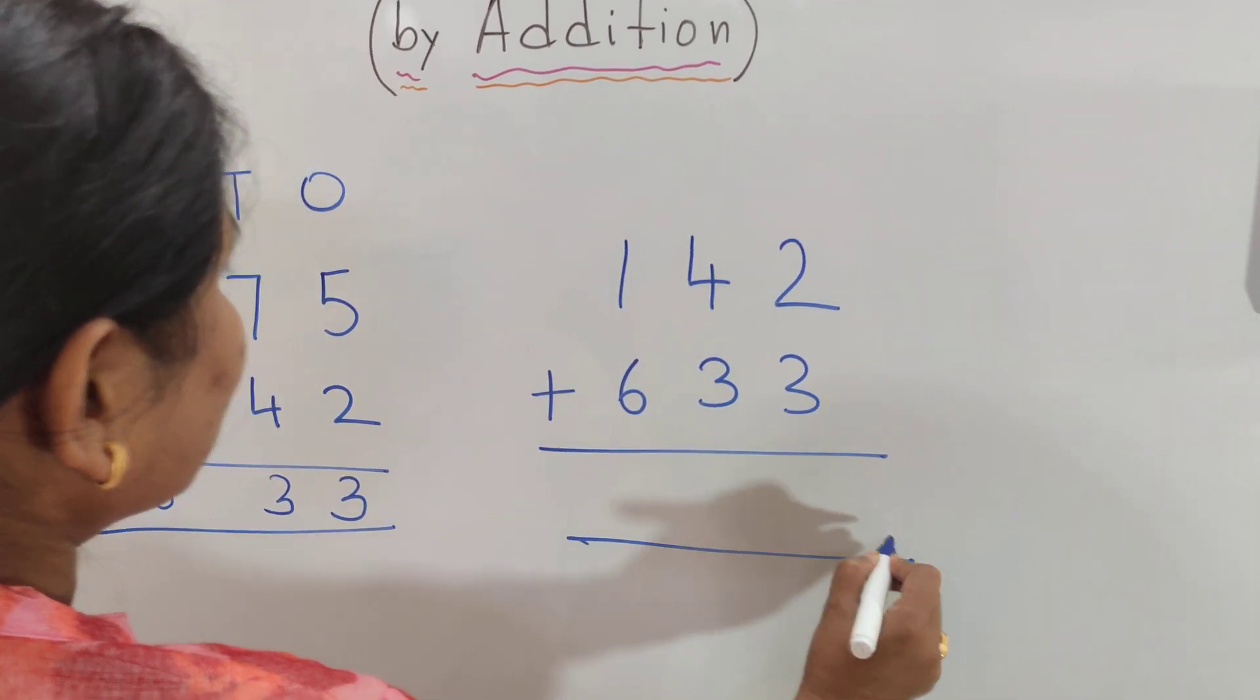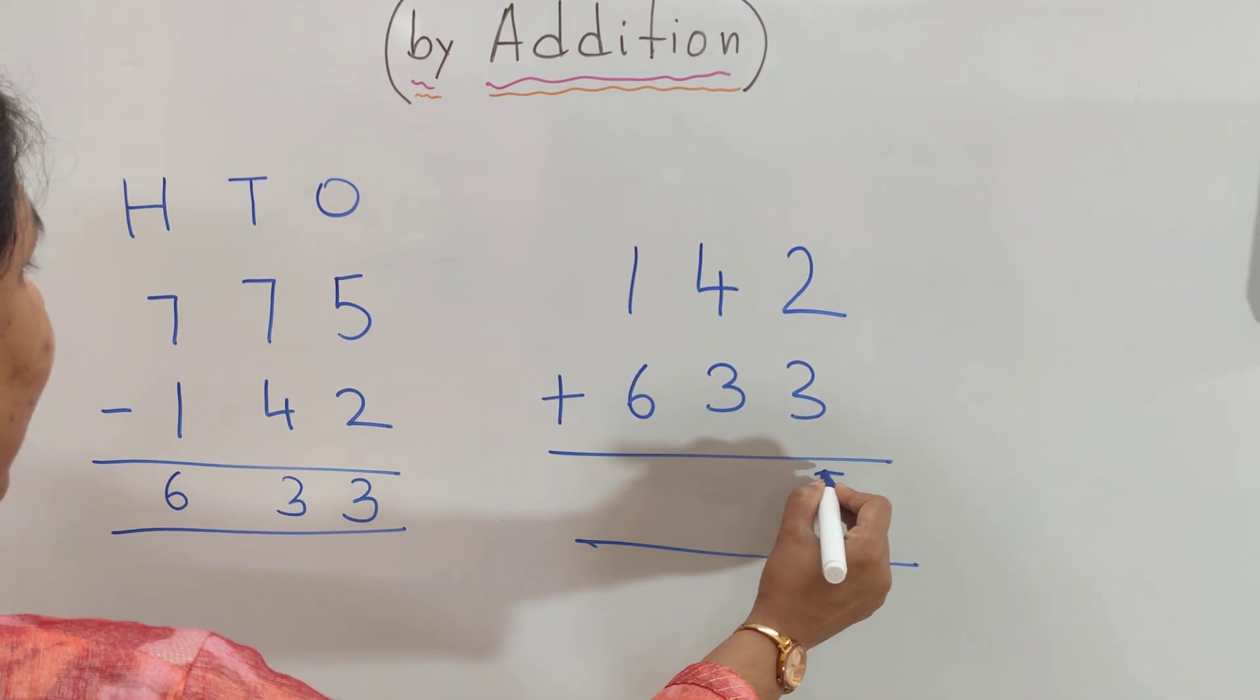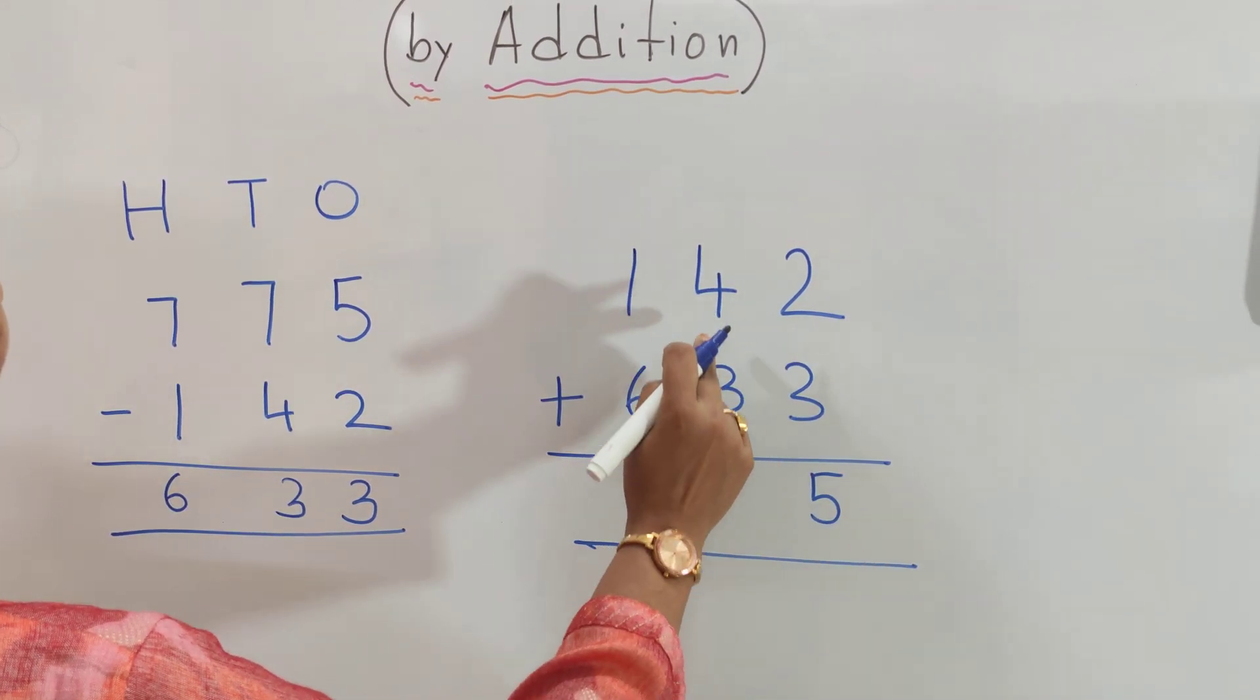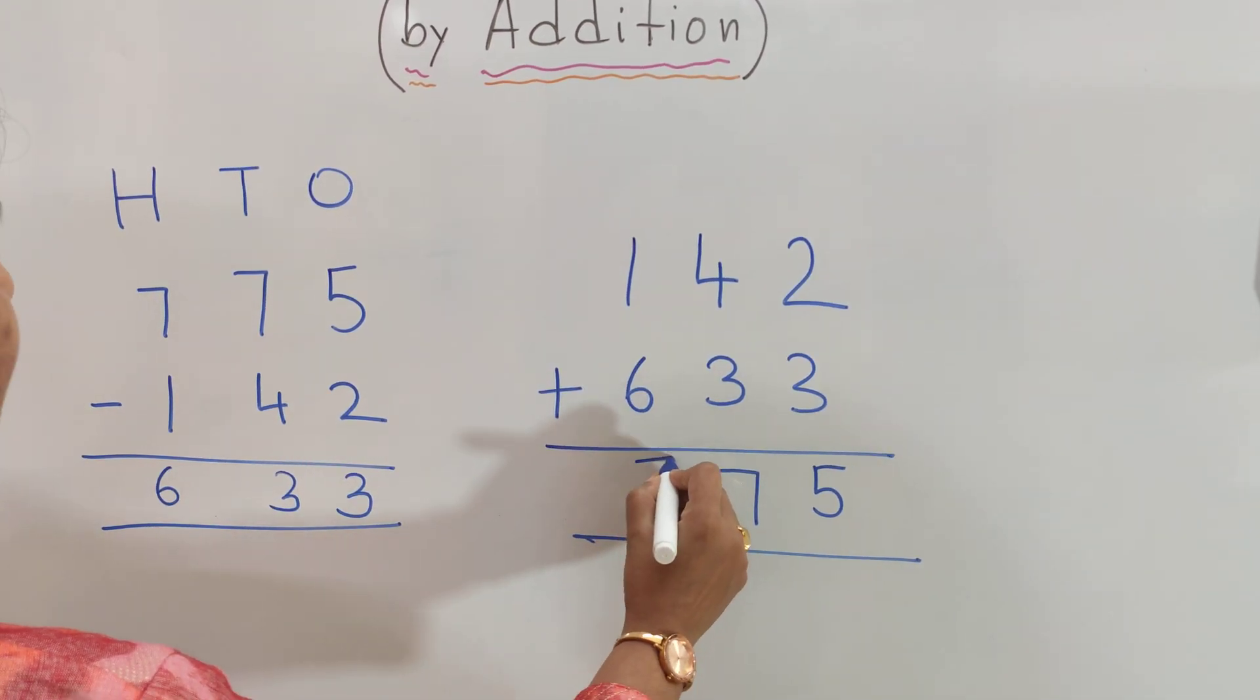So now let's check. 2 plus 3 is 5. 4 plus 3 is 7. And 1 plus 6 is 7.